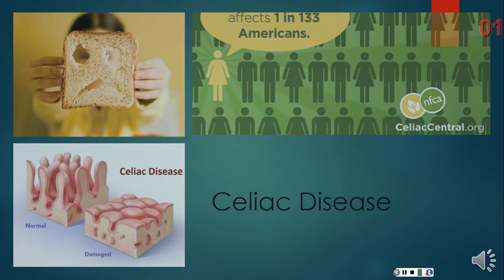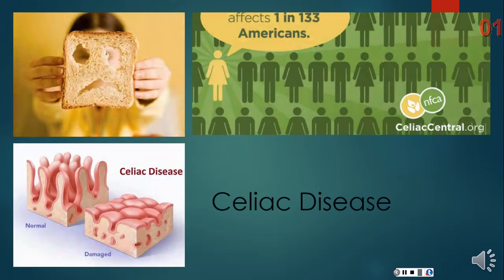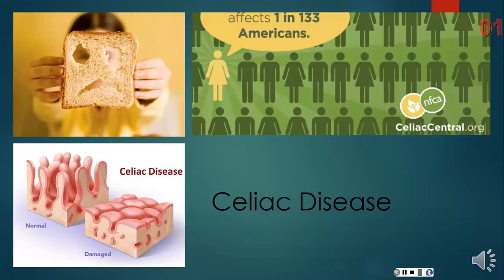CD is where the immune system is abnormally sensitive to gluten, which is found in wheat, rye, and barley, and can develop at any age. In many cases, one might not even know that they have the disease.